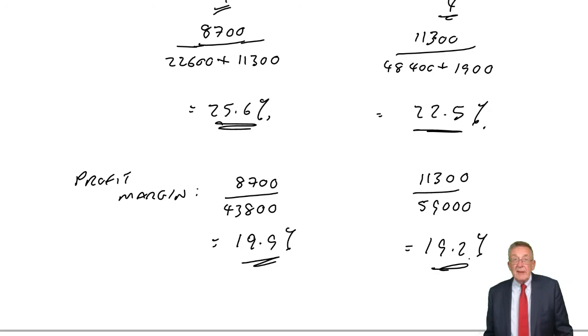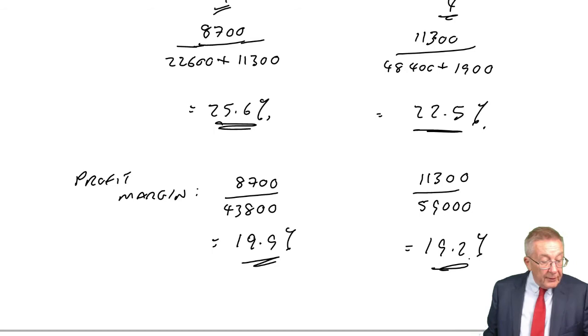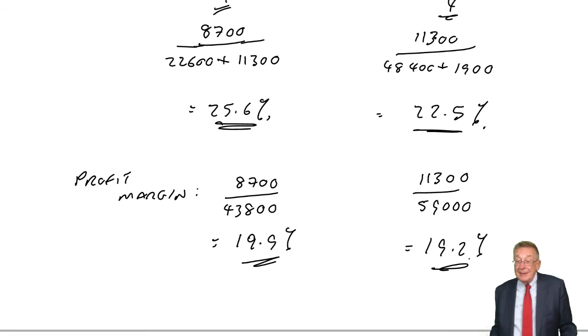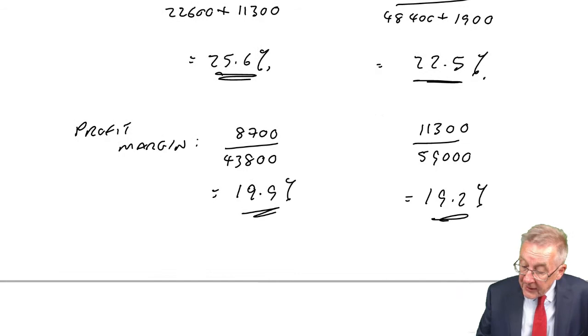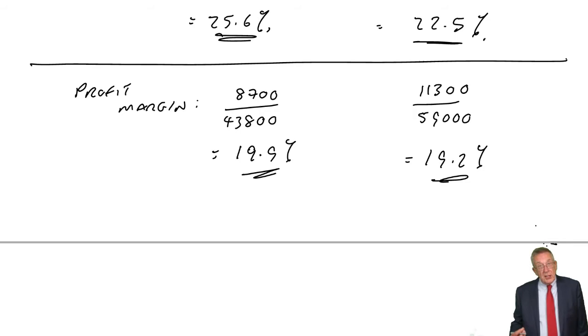But if it had gone down more, I'd be more worried. But it could be, for instance, that one of the reasons we've managed to sell a lot more, maybe we've dropped the selling price a bit, and therefore a lower profit margin.